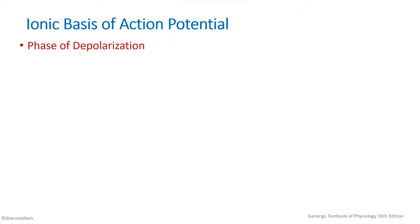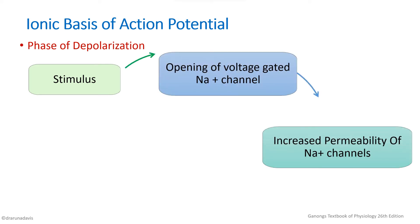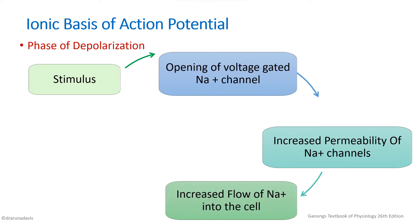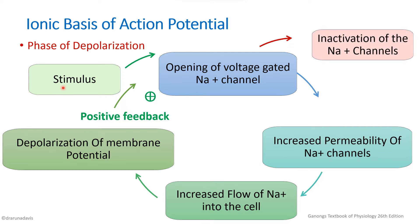In flowchart form: when a stimulus is applied, there is opening of voltage-gated sodium channels, leading to increased sodium permeability and influx of positive charge into the cell, causing depolarization. This depolarization in turn causes further opening of voltage-gated sodium channels — a positive feedback cycle. This cycle continues until the potential of plus 35 mV is reached, at which point sodium channels become inactivated.